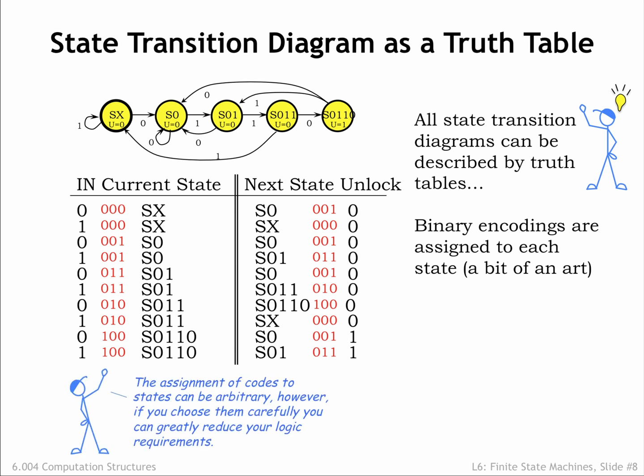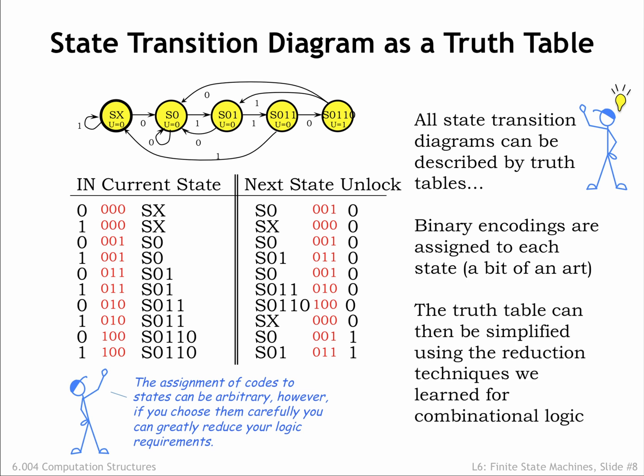We can assign the state encodings in any convenient way, for example 000 for the first state, 001 for the second state, and so on. But the choice of state encodings can have a big effect on the logic needed to implement the truth table. It's actually fun to figure out the state encoding that produces the simplest possible logic. With the truth table in hand, we can use the techniques from chapter 4 to design logic circuits that implement the combinational logic for the FSM.